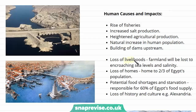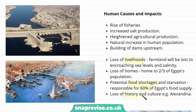Some of the impacts will be the loss of livelihoods, especially because farmland will be lost to encroaching sea levels and salinity. There will be a loss of homes — at the moment, the Delta is home to two-thirds of Egypt's population, which is a significant number of people. There will also be potential food shortages and starvation because the area is responsible for 60% of Egypt's food supply. Significantly, there will also be the loss of history and culture, because Alexandria is one of these coastal towns. It was very significant in Roman and Greek times and has a lot of history and culture attached to it.